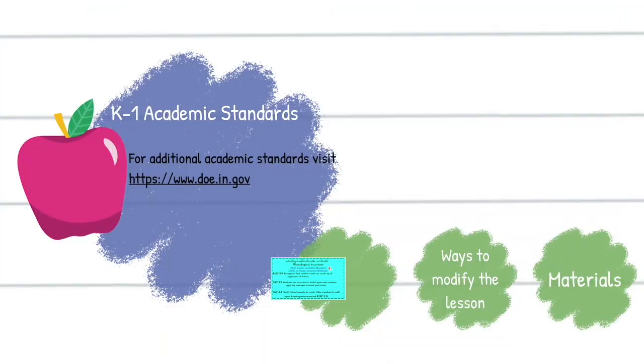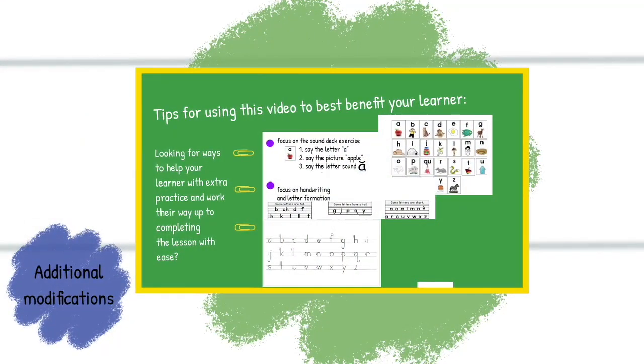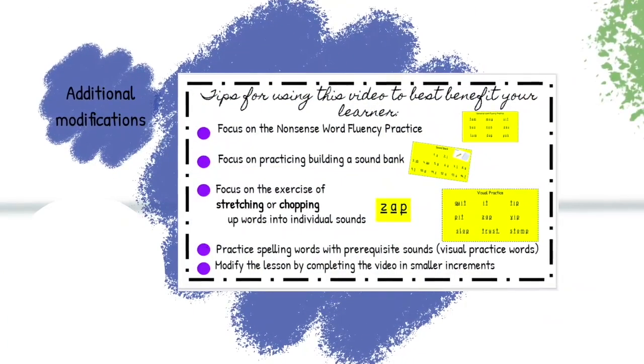If you are interested in looking at additional academic standards that are grade level specific, please feel free to visit the IDOE website that is listed right here. I always include some tips for parents on how to modify this video to best benefit your learner. The purple dots represent the level of difficulty. These suggestions are for learners who are looking for extra practice, who might need to complete this video lesson in smaller increments. These are additional modifications for learners who need a little bit of extra help to complete the video with ease.